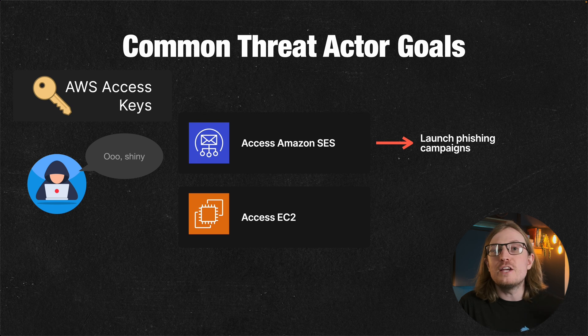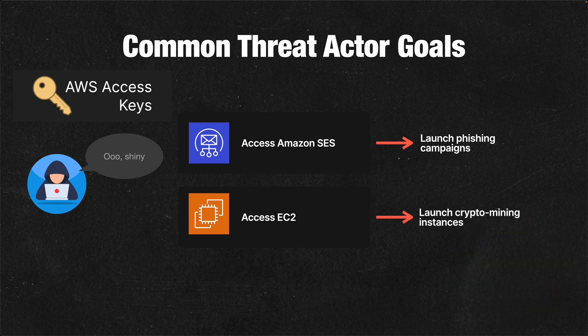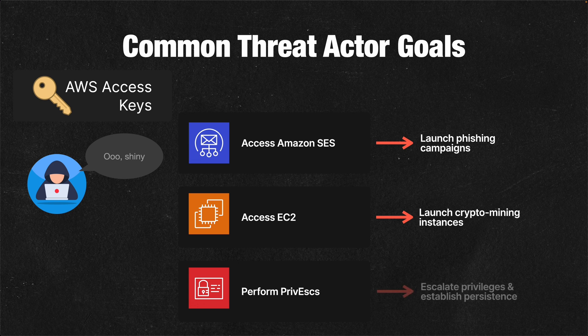They may try to access EC2 to launch crypto mining instances, or they may try to perform privilege escalation or establish persistence through IAM, which we've been covering a lot on this channel.